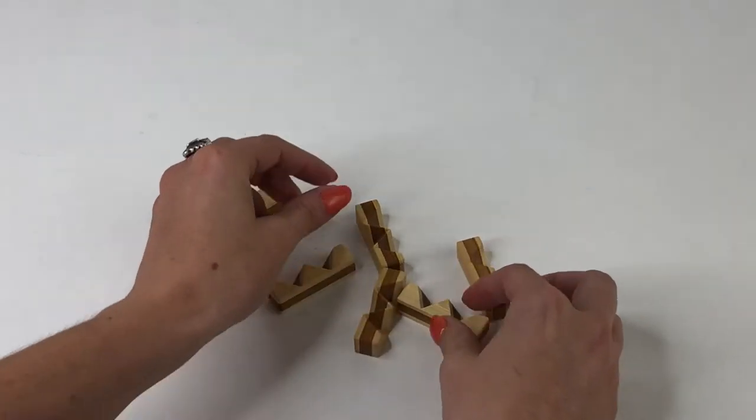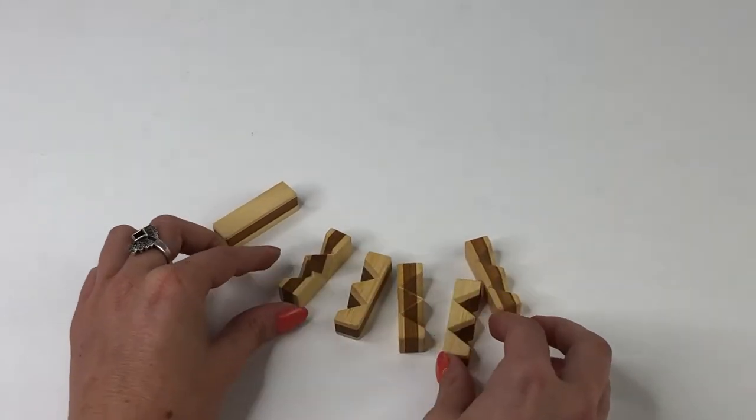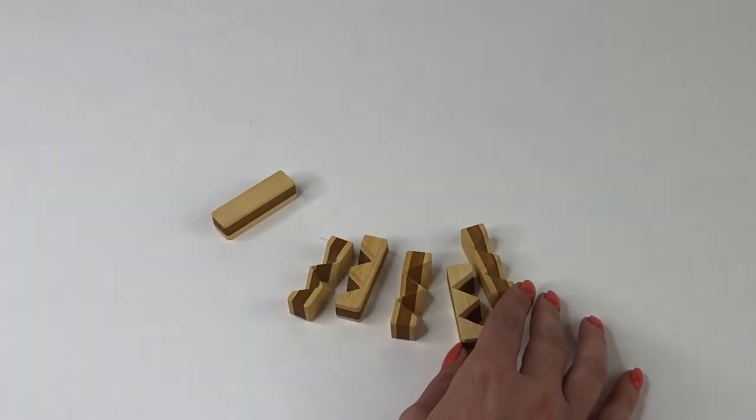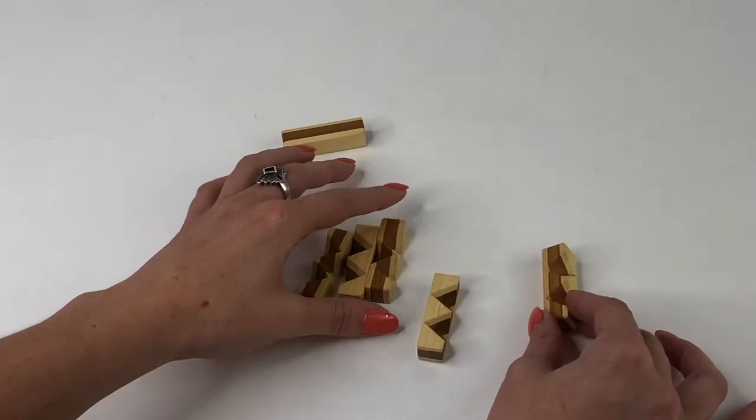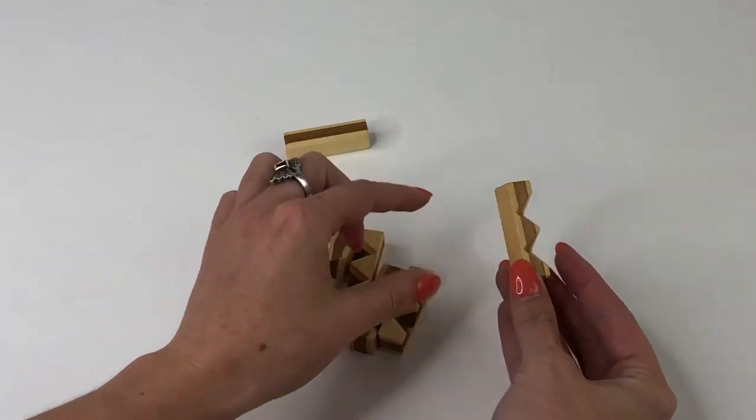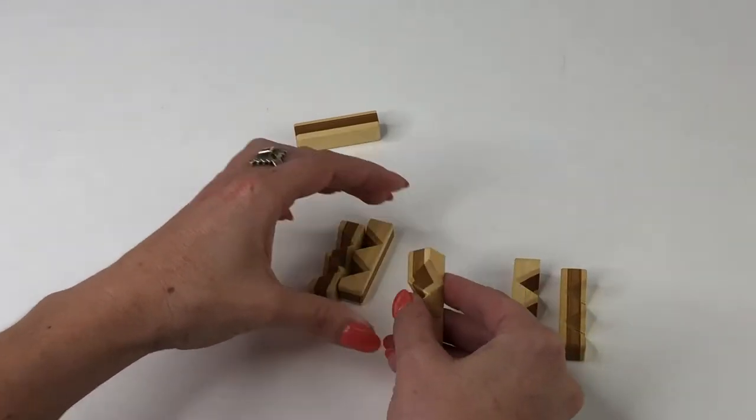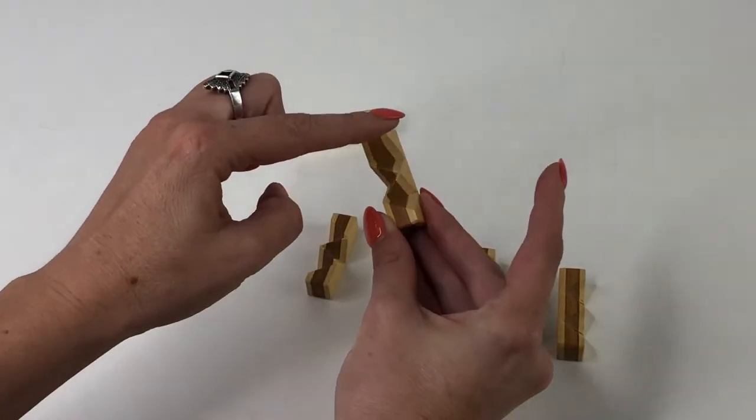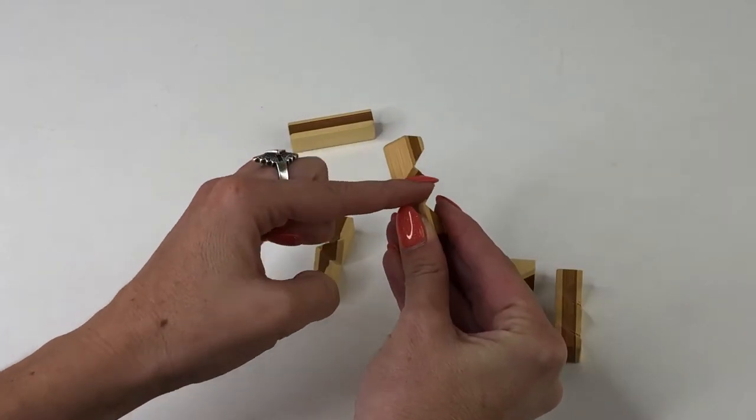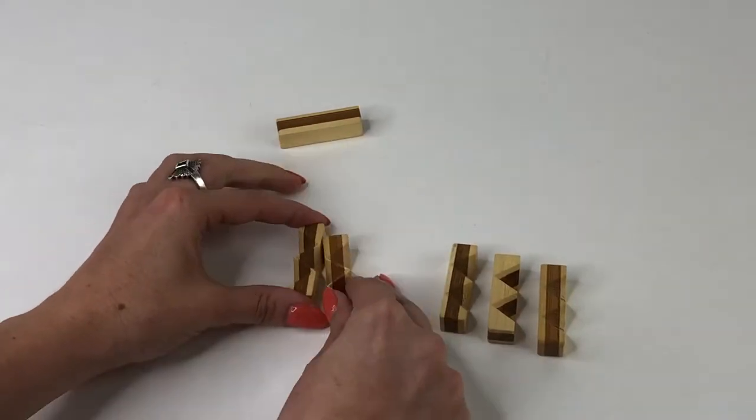Once you've taken it apart, which as you saw falls apart pretty quickly, you want to split up your pieces into your one single piece, and then there should be three pieces that have two divots on them, like so. And then two pieces that have three divots, two here and one on this side. So those are your different pieces.